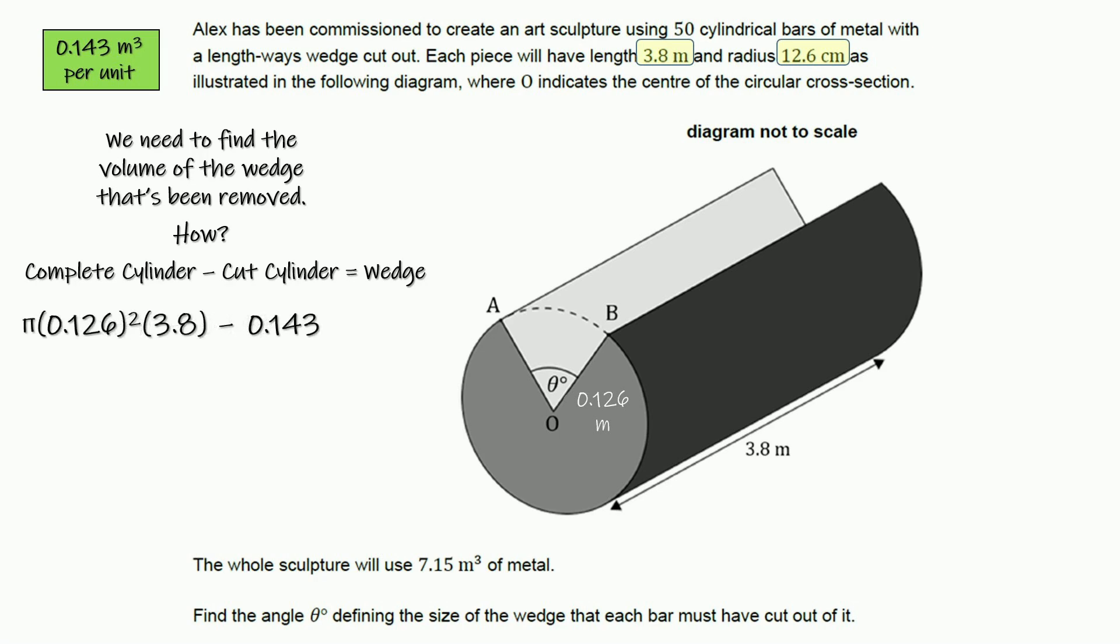And when we subtract those two, what we'll have left is the wedge. So plugging in our radius and our length, we can just plug those numbers into the calculator, and we can find that the volume of the wedge is 0.0465 cubic meters.